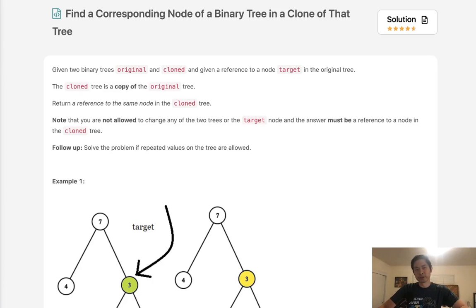Welcome to January's LeetCode challenge. Today's problem is find a corresponding node of a binary tree in a clone of that tree. So what does that mean? We're given two binary trees, an original and a cloned, and we're going to be given the reference to a node inside of the original tree called target.